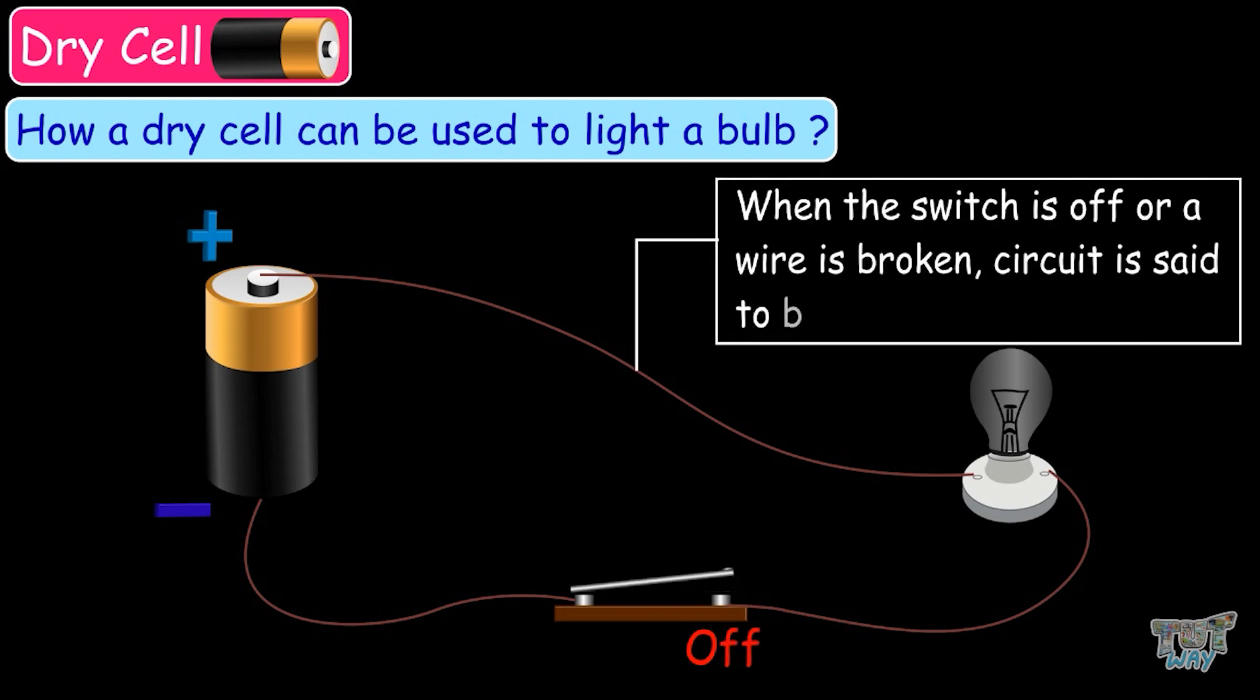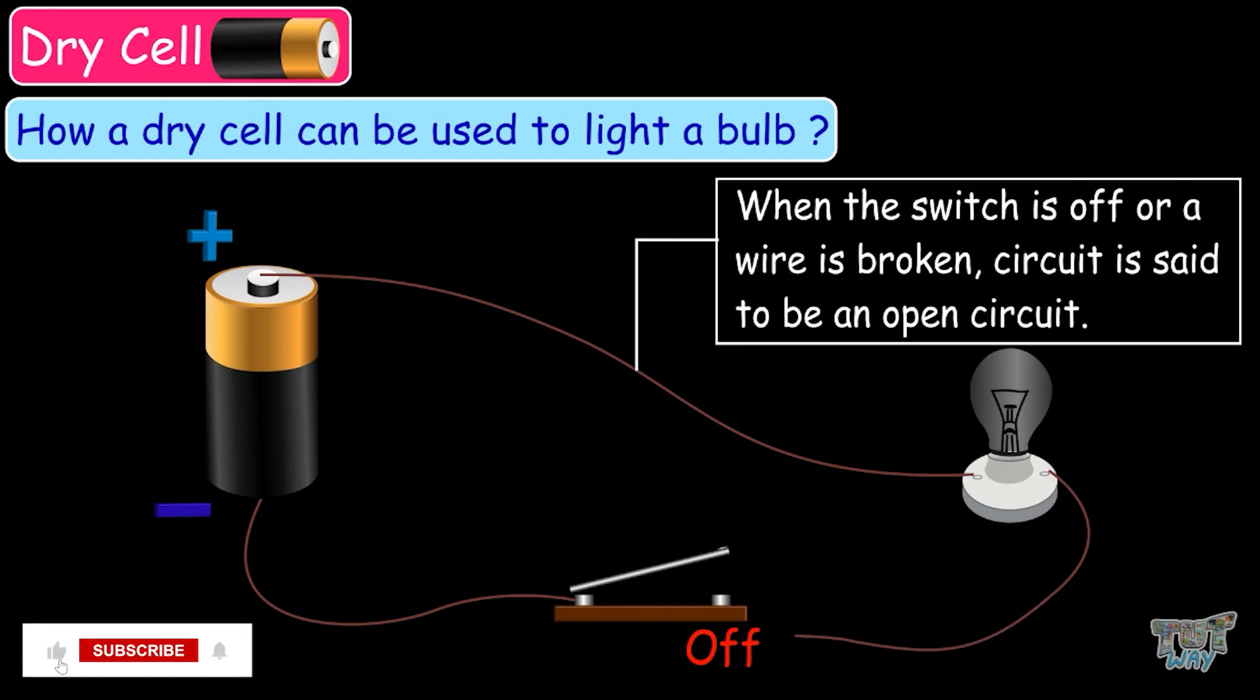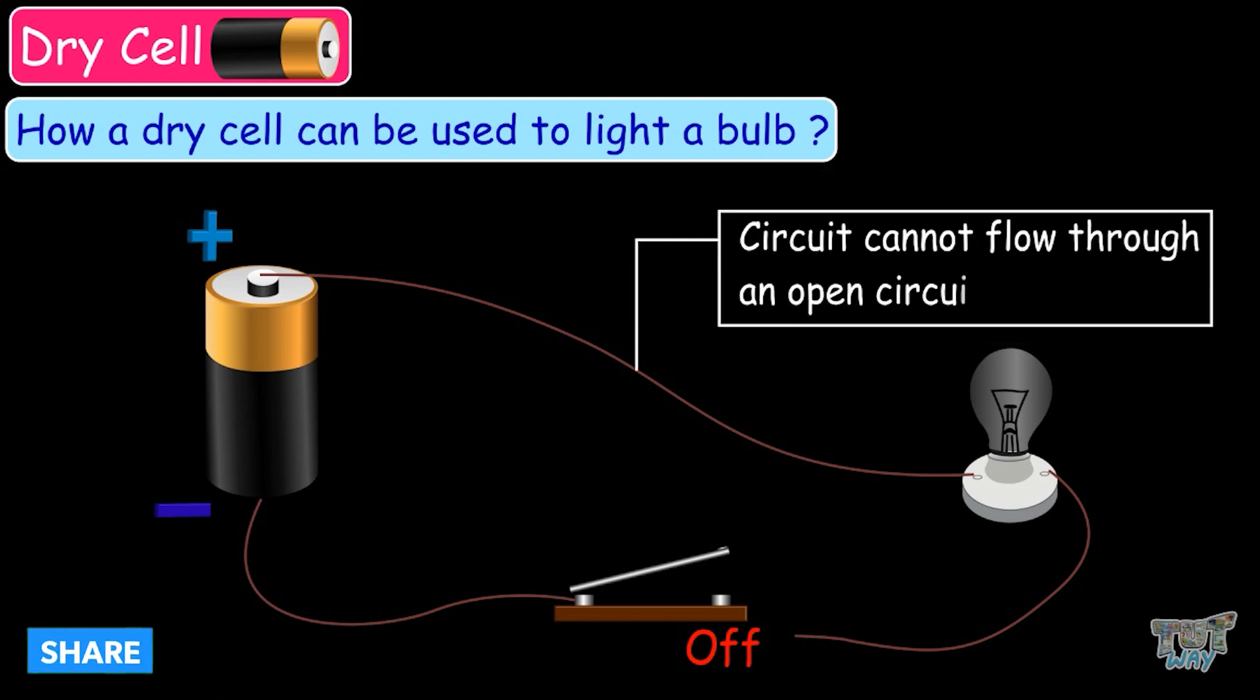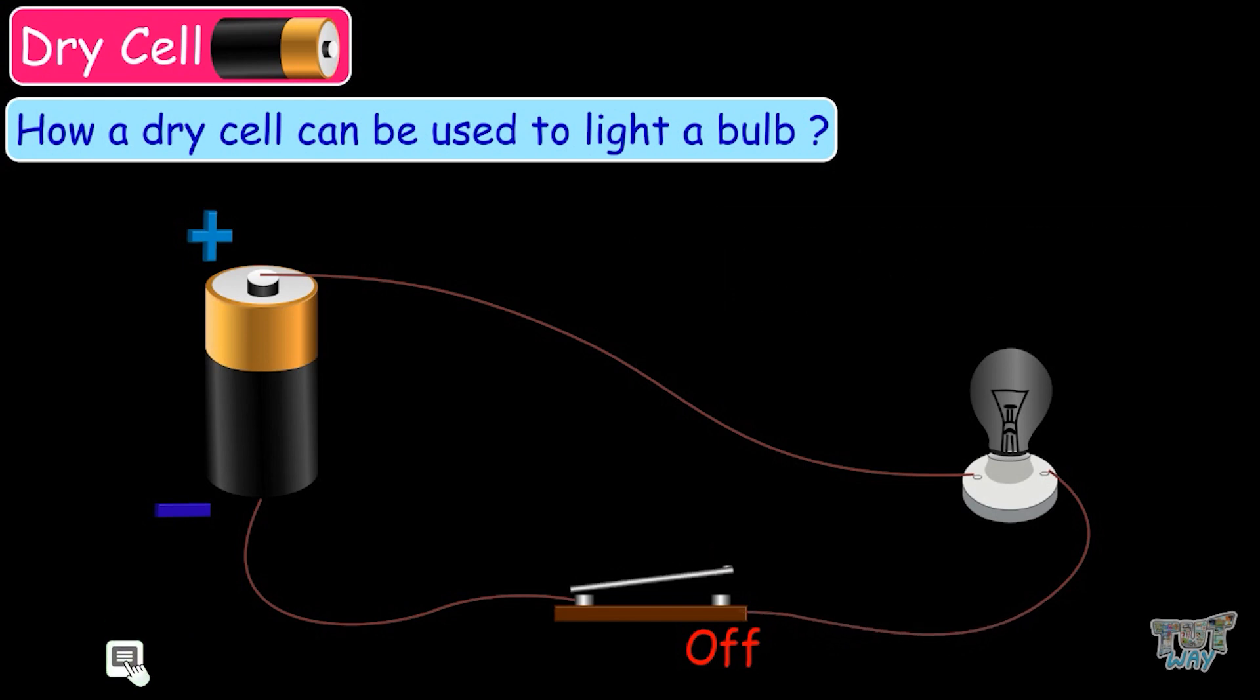Whereas, when the switch is off, or if a wire is broken, in both cases, the circuit is incomplete. The current cannot flow through the open circuit. The current only flows when the circuit is closed.